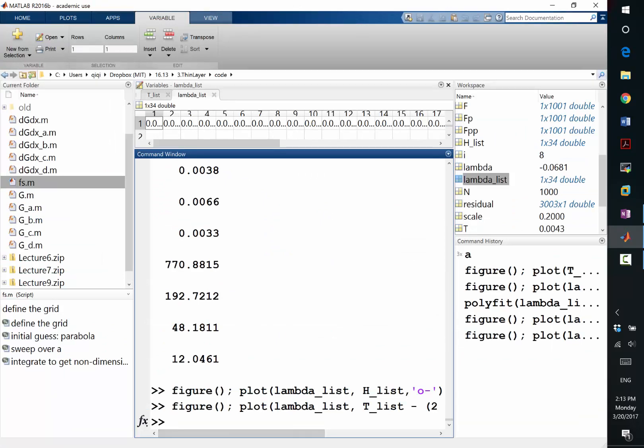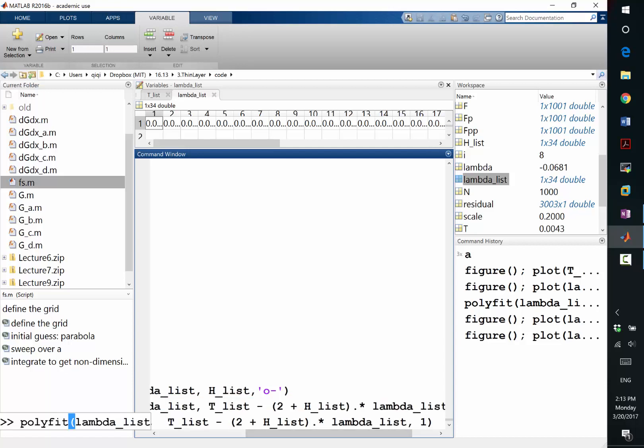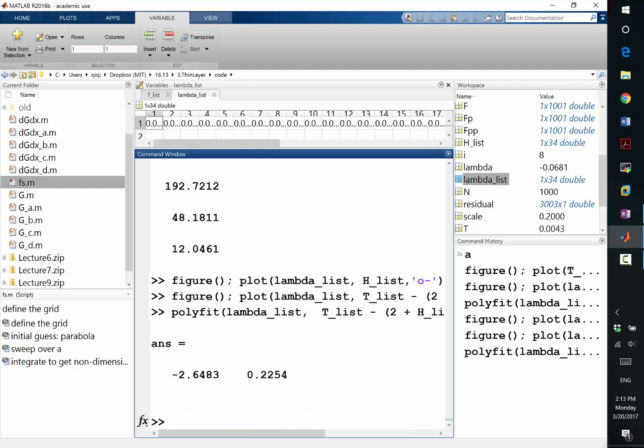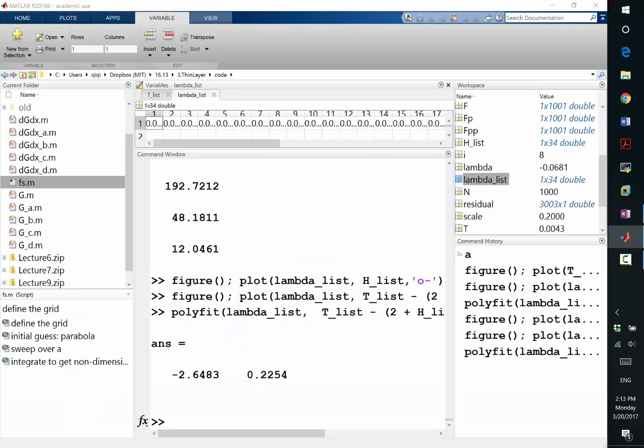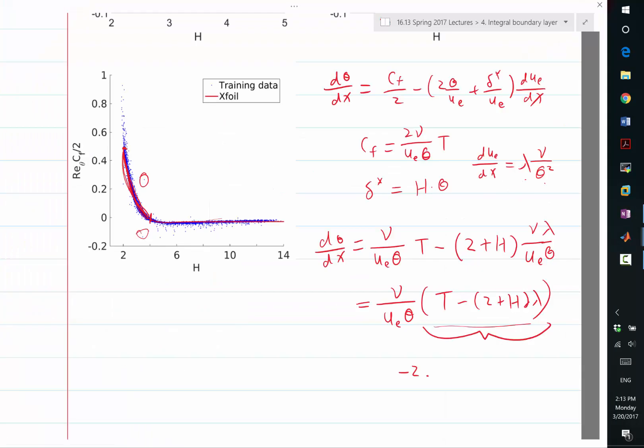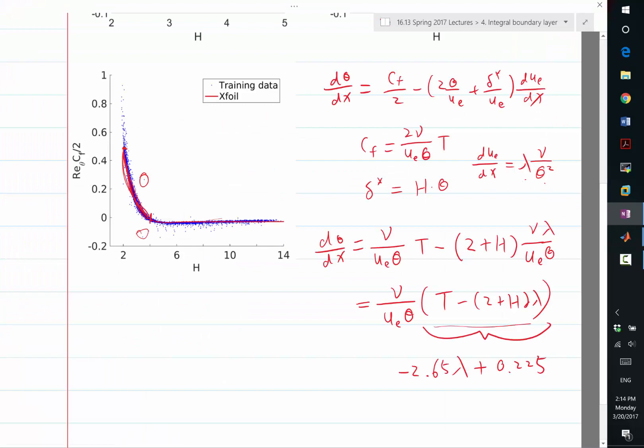So, we can always fit this by polyfit, lambda list. And polyfit is, basically, just fitting polynomials. And here, I just fit a first order polynomial, that's a linear, right? So, I get, basically, this thing should be minus 2.65 lambda, right, 6, 5, plus 225, right? So, this is it.